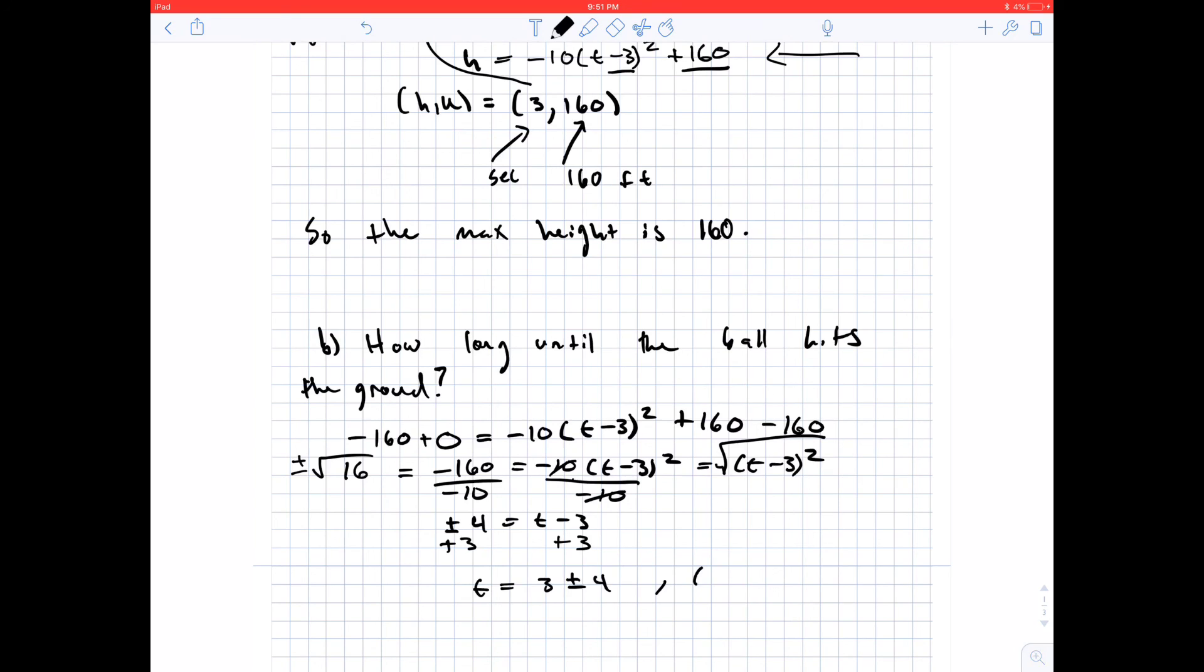In other words, t is equal to 3 plus 4, which is equal to 7. And t is equal to 3 minus 4, which is equal to negative 1.